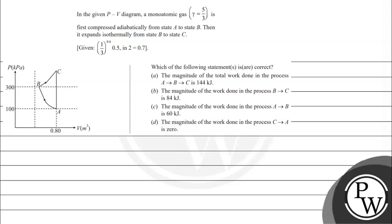Hello, let's read this question. This question is: in the given PV diagram, a monoatomic gas with gamma equals 5/3 is first compressed adiabatically from state A to B, and then it expands isothermally from B to C. Which of the following statements are correct?